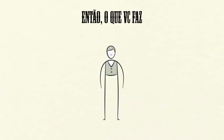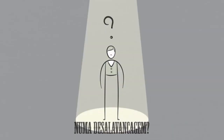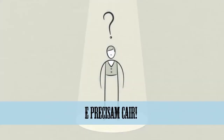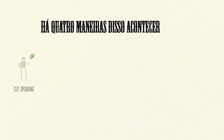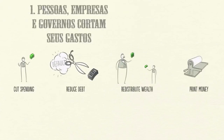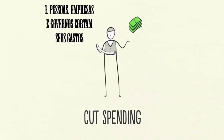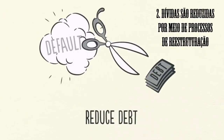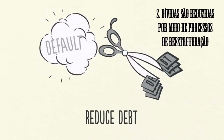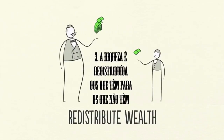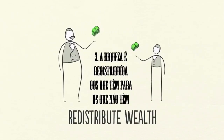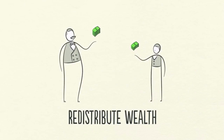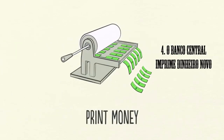So what do you do about a deleveraging? The problem is debt burdens are too high and they must come down. There are four ways this can happen. One: people, businesses, and governments cut their spending. Two: debts are reduced through defaults and restructurings. Three: wealth is redistributed from the haves to the have-nots. And four: the central bank prints new money.